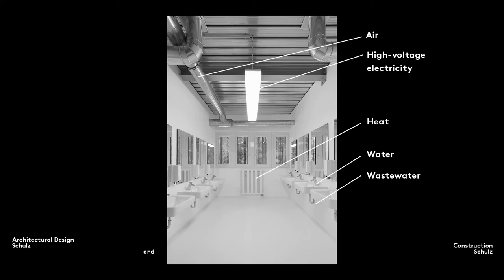The key elements are all illustrated in this washroom we designed for a sports hall in Leipzig: wash basins, a radiator, air ducts and lighting.